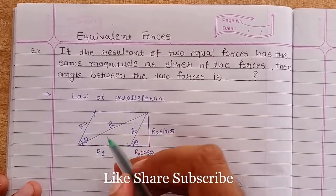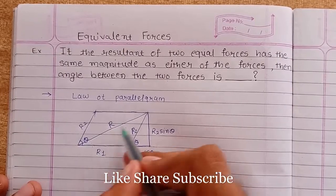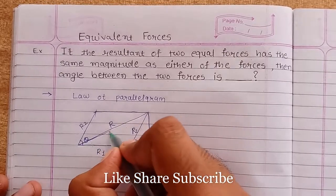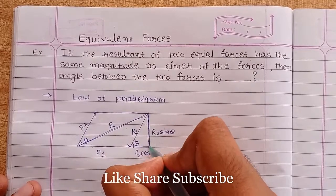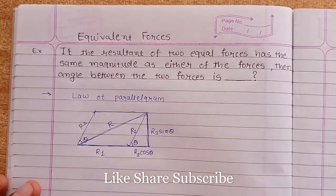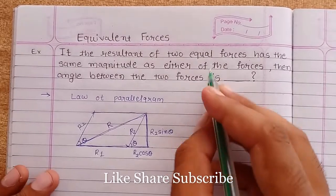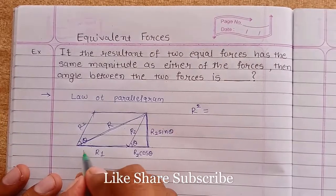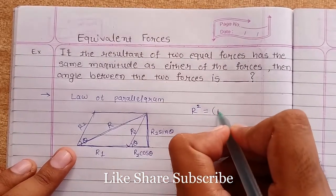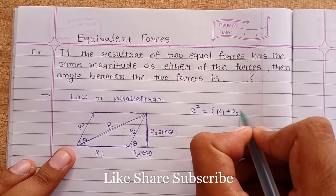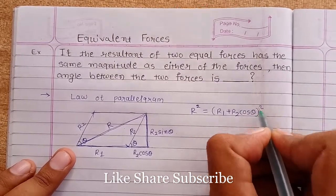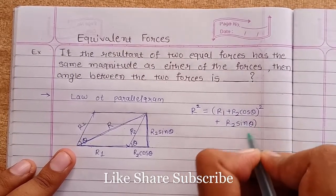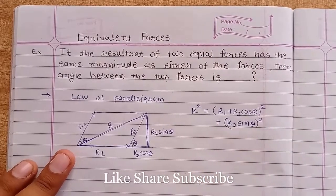The resultant is equal to the diagonal passing from the intersection of R1 and R2. Considering this right-angle triangle and applying the Pythagorean theorem: hypotenuse squared equals (R1 + R2 cos theta) squared plus (R2 sin theta) squared. This gives us the resultant force.